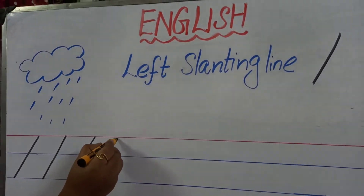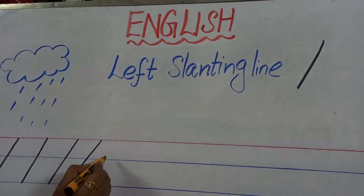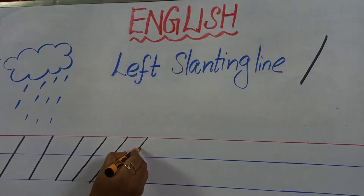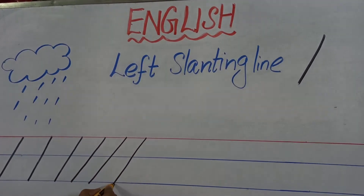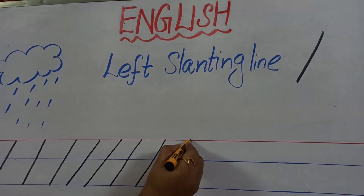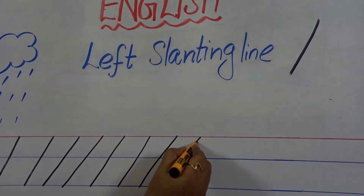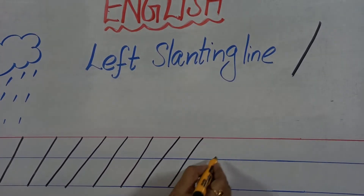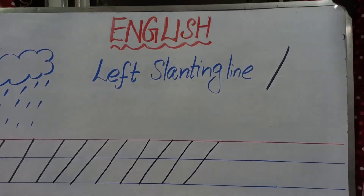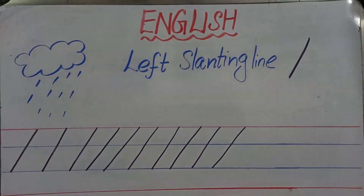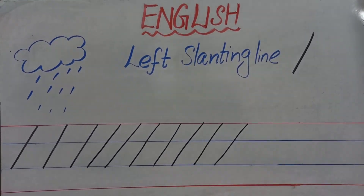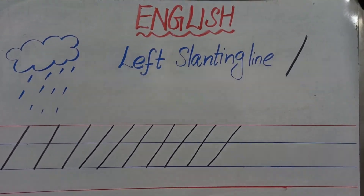This is called what? Left slanting line. This is called what? Left slanting line. This is called left slanting line. The same way you all have to practice left slanting line in your four lines notebook. Thank you all.